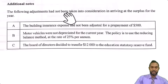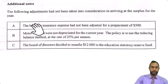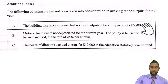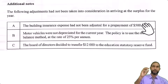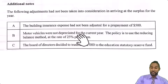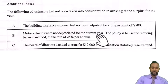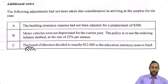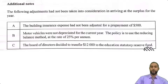Additional notes: the following adjustments had not been taken into consideration in arriving at the surplus for the year. The building insurance expense had not been adjusted for a prepayment, so we're supposed to take out prepayments, which means we would have subtracted an expense for insurance that was too high. Motor vehicles were not depreciated for the current year; the policy is to use the reducing balance method. And the Board of Directors decided to transfer $12,000 to the education statutory reserve fund — that'll go in the appropriation account.